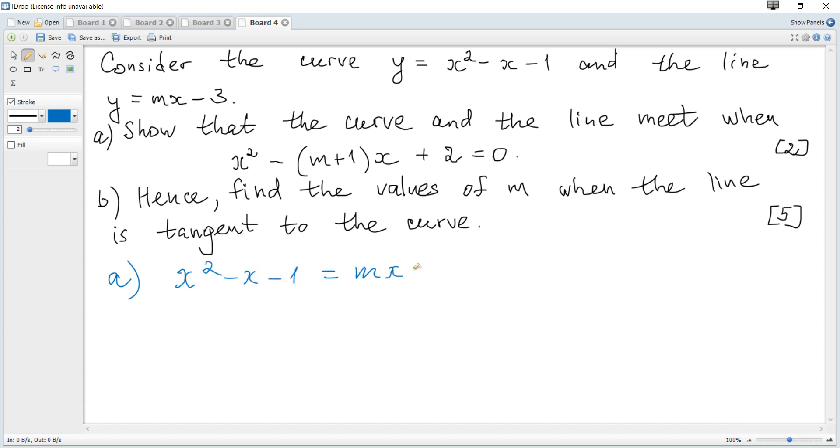It becomes x squared minus x minus mx plus 2 equals 0, and finally it's x squared minus (m plus 1) times x plus 2 equals 0 as required.